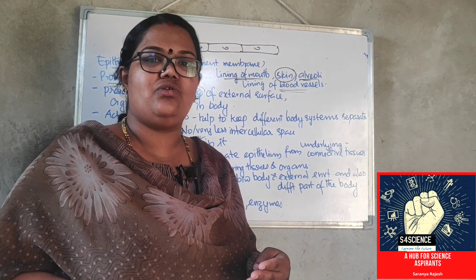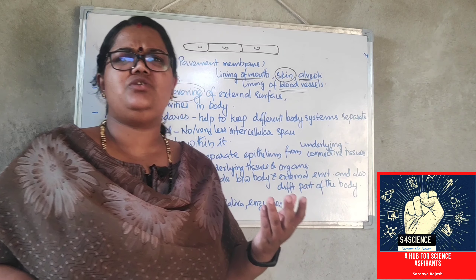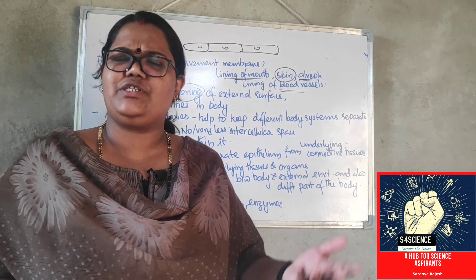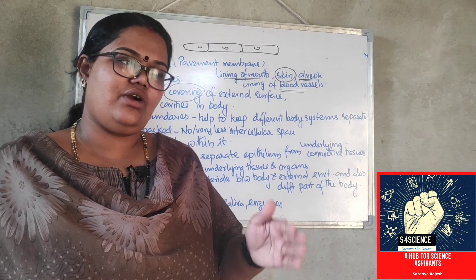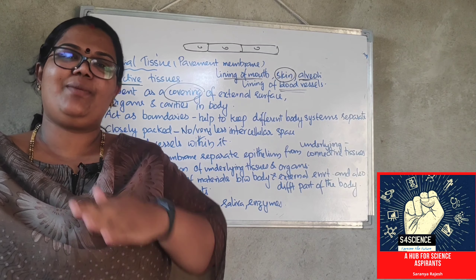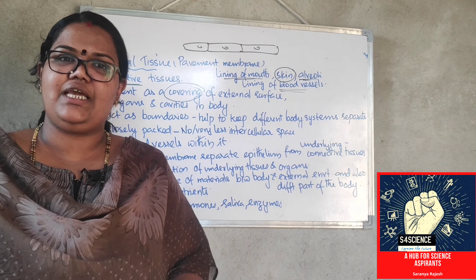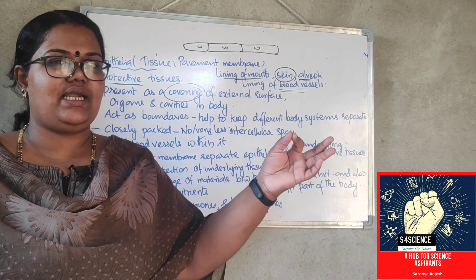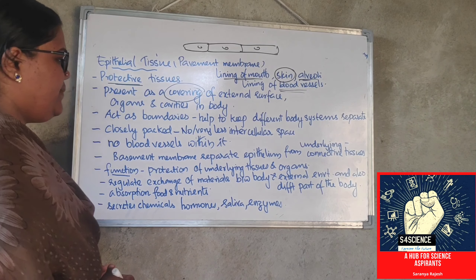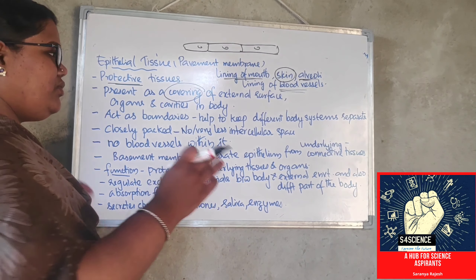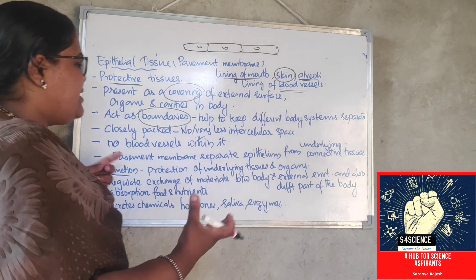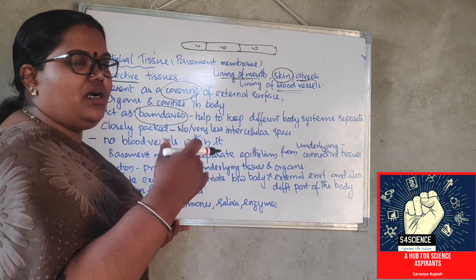Epithelial tissue is also acting as a barrier. By forming this barrier, only certain substances can go inside and come outside. These cells are present at the boundaries — acting as a boundary and a link between different tissues. Just like a gateway security in a house or office — only through that barrier can you go inside and come out — like that, epithelial tissue is a barrier and protective covering. Substances can go inside and come outside only through it.